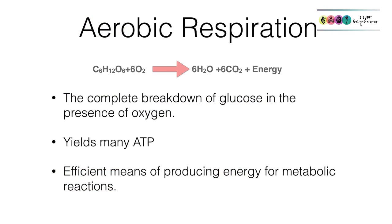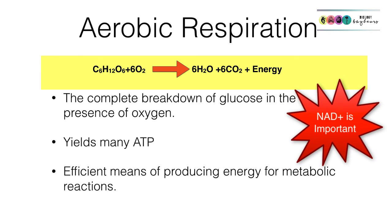So that's aerobic respiration — the complete breakdown of glucose in the presence of oxygen. It yields many ATP molecules and is a very efficient means of producing energy for all our metabolic reactions. It's important that you can write a balanced equation for the process and give an account of what happens at each stage, particularly how NAD+ traps and transfers those electrons and one proton each time.